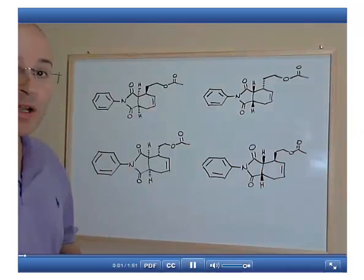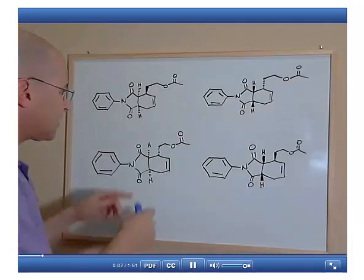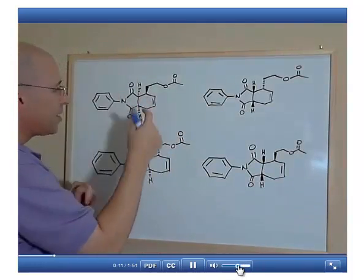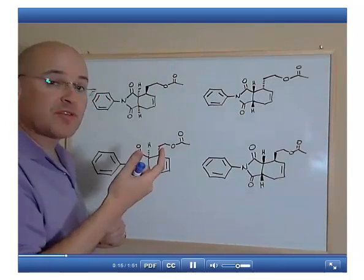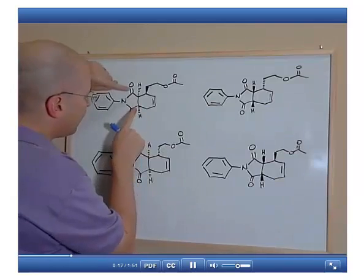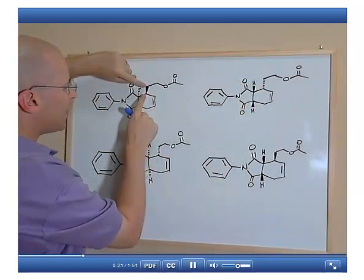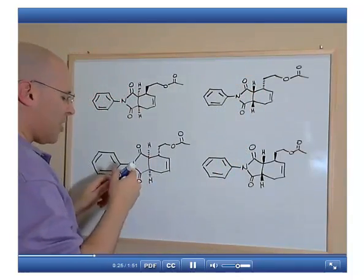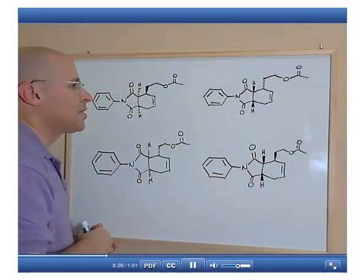Here we have one of the main products shown in the problem statement. The problem statement indicates that the other major product is the enantiomer of this compound — the compound where the configuration at every chirality center has been inverted. Here we have two dashes and here we have wedges; here we have a wedge and here we have a dash. These compounds are enantiomers of each other, a pair of enantiomers.